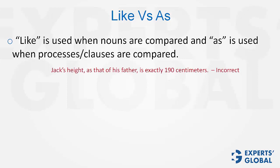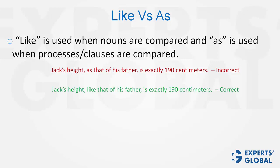Example: Jack's height as that of his father is exactly 190 centimeters. Jack's height is a noun, and therefore as is not the correct term for drawing the comparison — it has to be like. This sentence is correct with like.